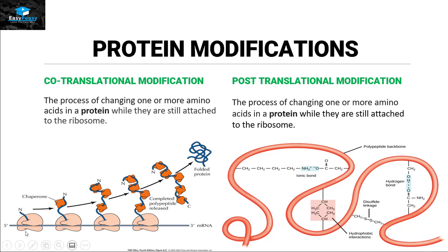As you can see in this picture, the protein is still attached to the ribosome and the ribosome is still moving along the messenger RNA, but chaperones start attaching themselves to this protein and start folding it into the tertiary and quaternary state. Since folding comes under the category of modification, this type is called co-translational modification.